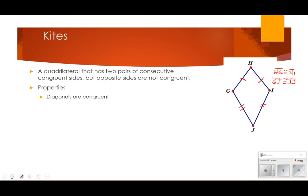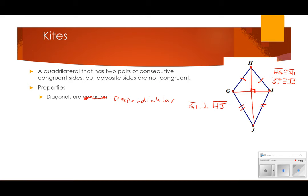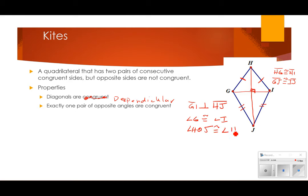So what are the properties of a kite? The diagonals are most certainly not congruent — what they are is perpendicular. So GI is perpendicular to HJ. Also, exactly one pair of opposite angles are congruent. In this case, angle HGJ is congruent to angle HIJ.